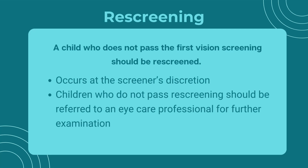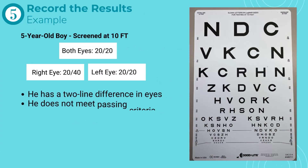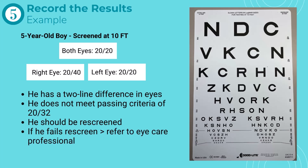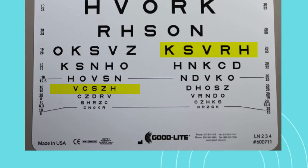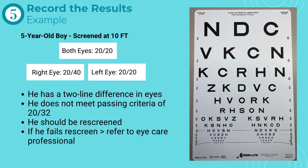A child who does not pass the first vision screening should be rescreened, at the discretion of the screener. If the child does not pass the rescreen, they should be referred to an eye care professional for further examination. In our previous example with the five-year-old boy, there are two indicators for rescreening: first, the measurement for his right eye is two lines away from his left eye; second, the right eye measurement of 20/40 does not meet the passing criteria of 20/32 or better. If the child has similar results in the rescreening, he will need to be referred for a comprehensive eye exam.